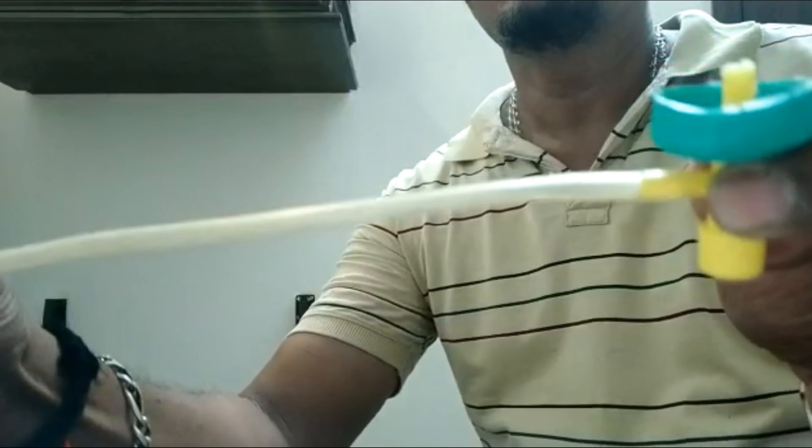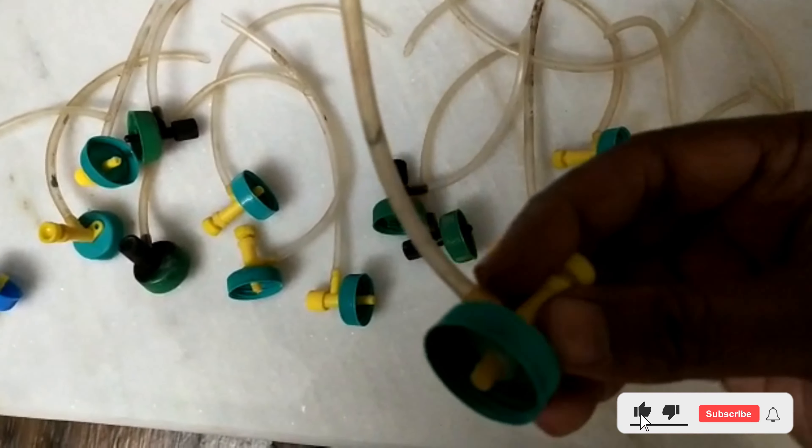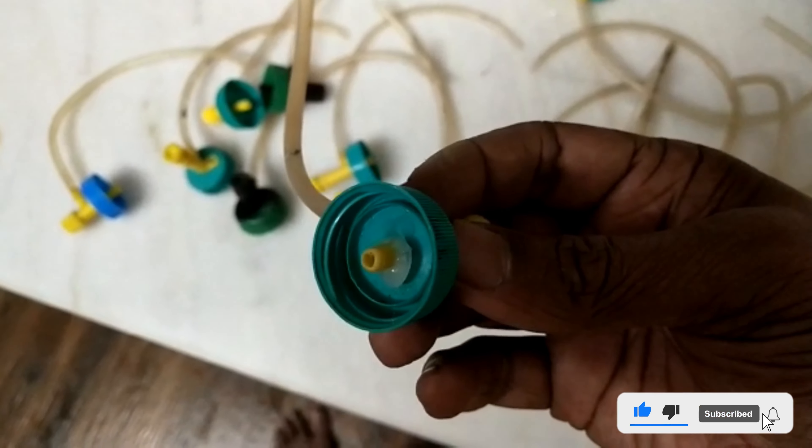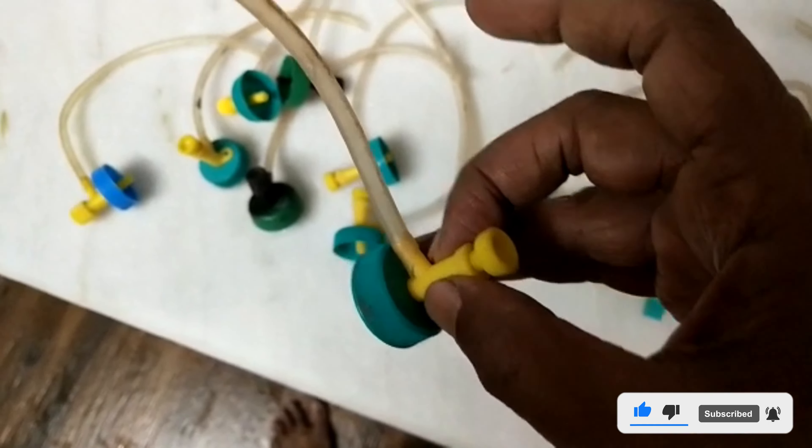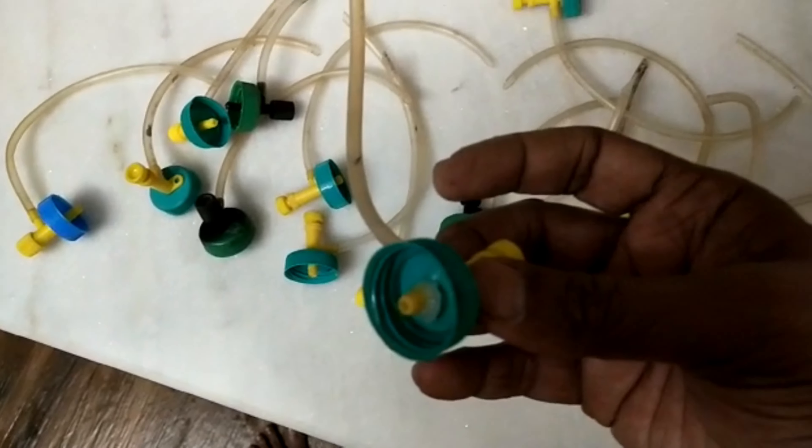So like that, you have a full extension and the nozzles are ready. The bottle cap is fixed with the nozzle and the extended pipe. You have to fit this to the bottle, and your drip system is ready.